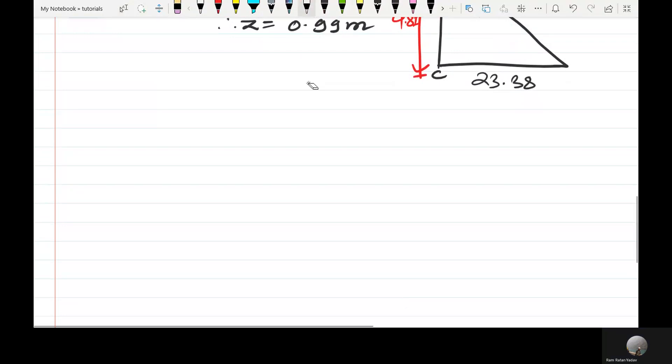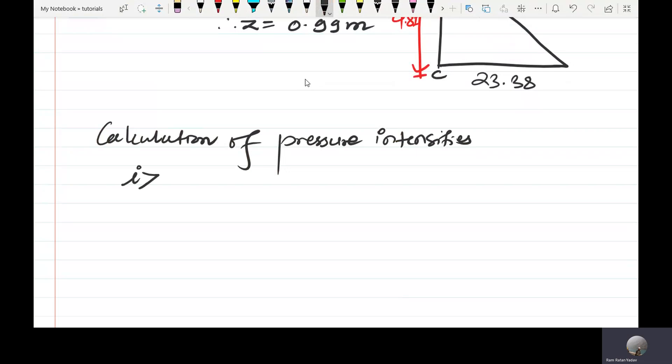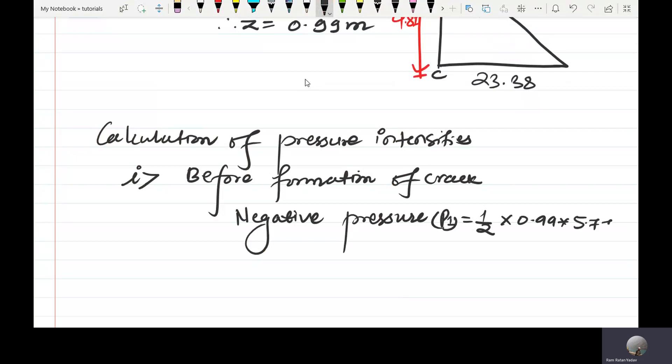Before formation of crack, the negative pressure P1 is 5.77. The negative pressure at 0.99 depth becomes 2.86 kilonewton.